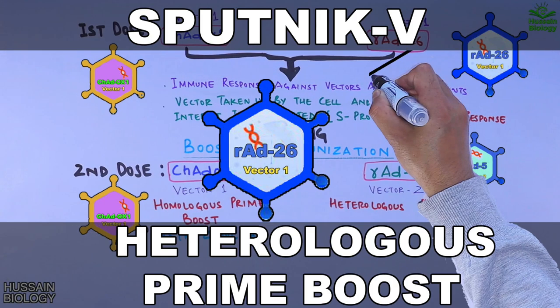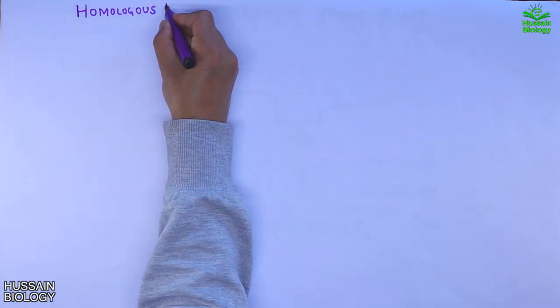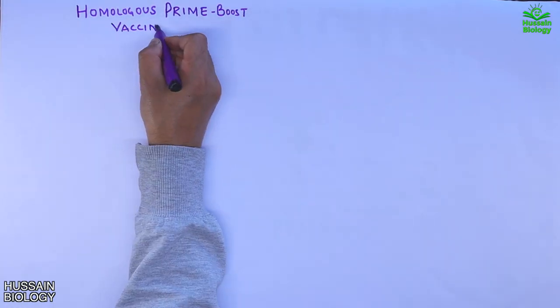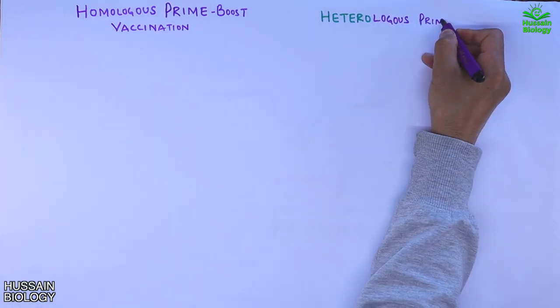In the previous video of the COVID series, we discussed the Sputnik V vaccine, which is based on the heterologous prime-boost method. In this video, we'll be discussing homologous prime-boost vaccination versus heterologous prime-boost vaccination.